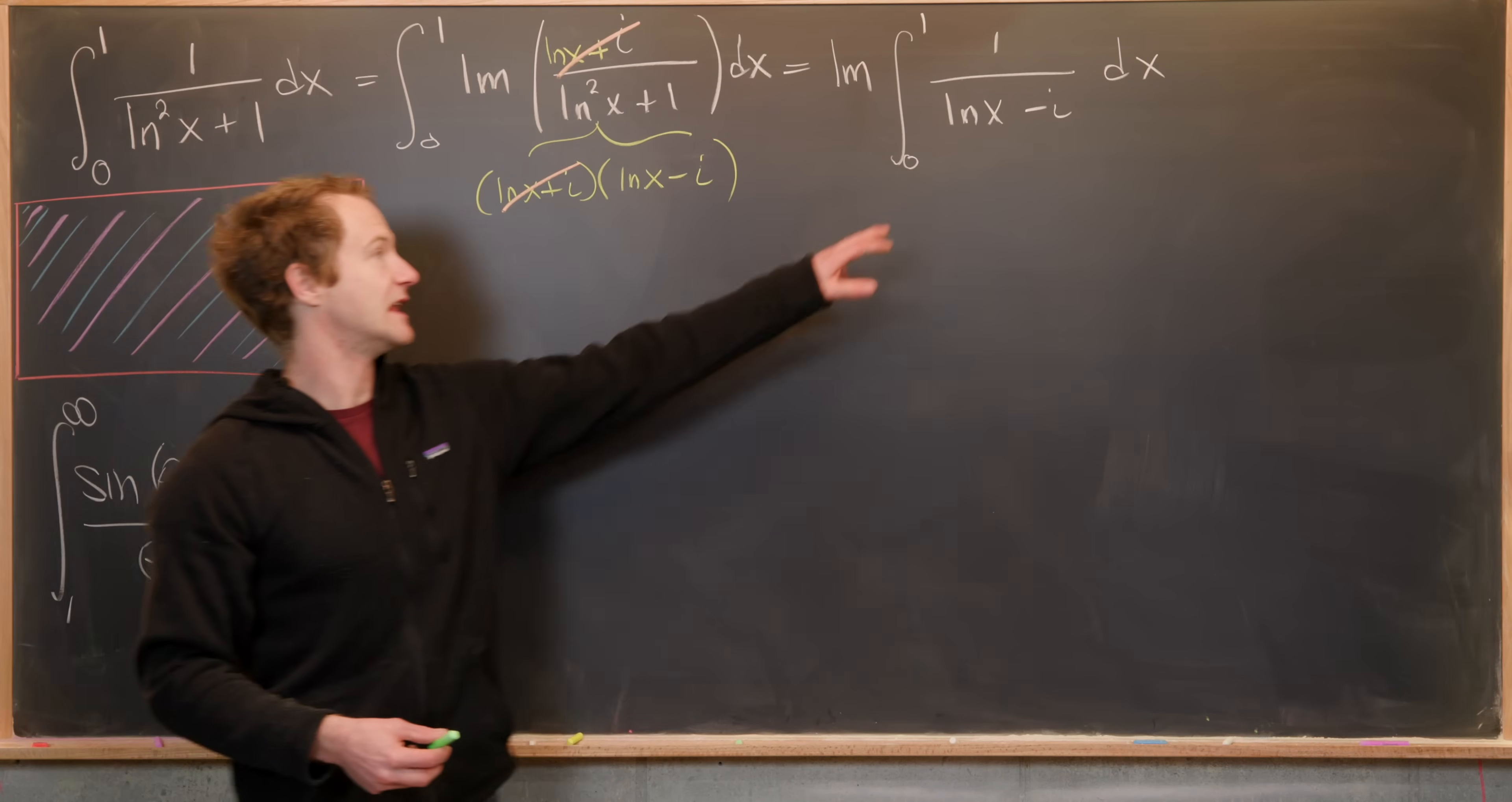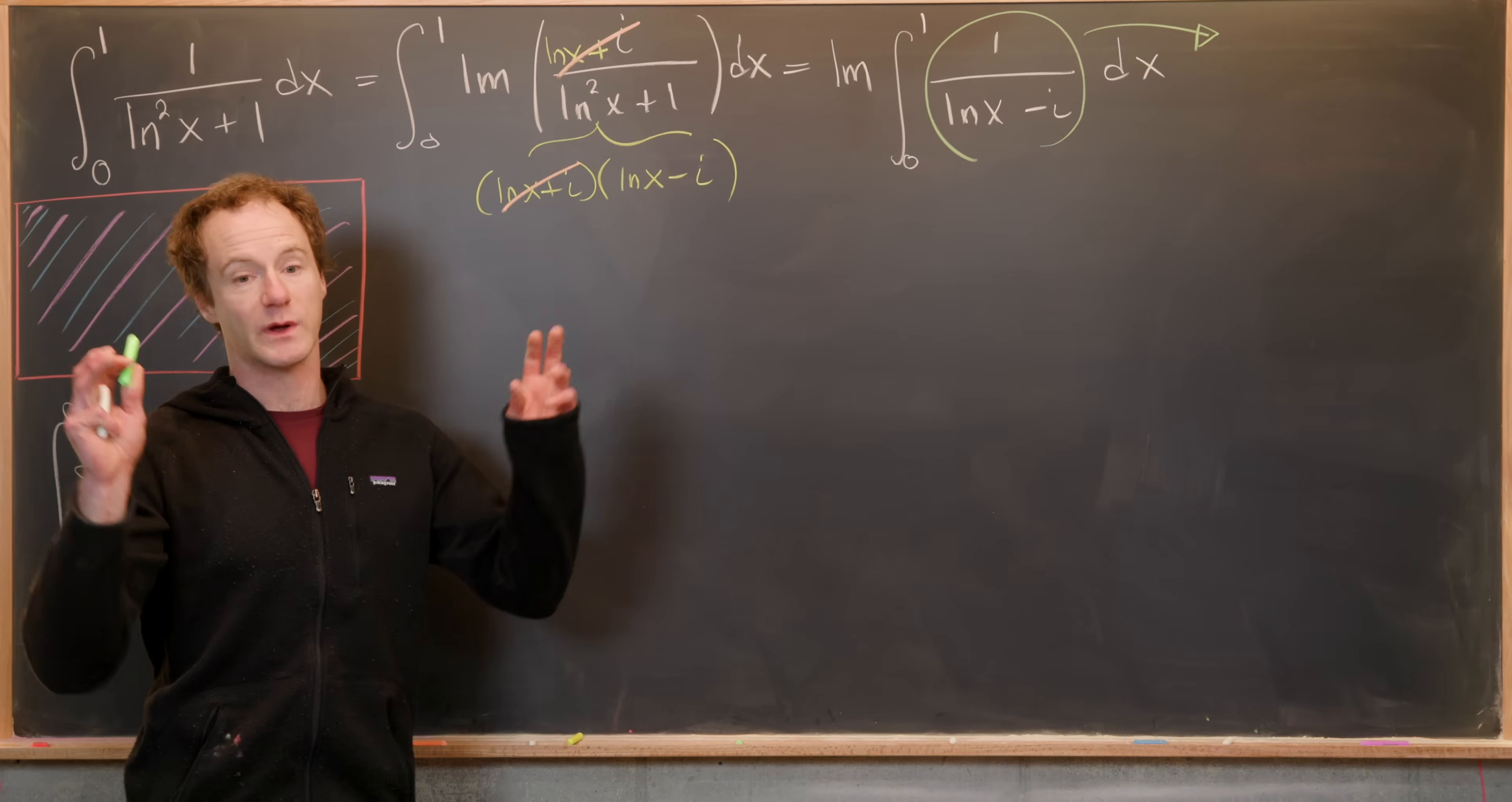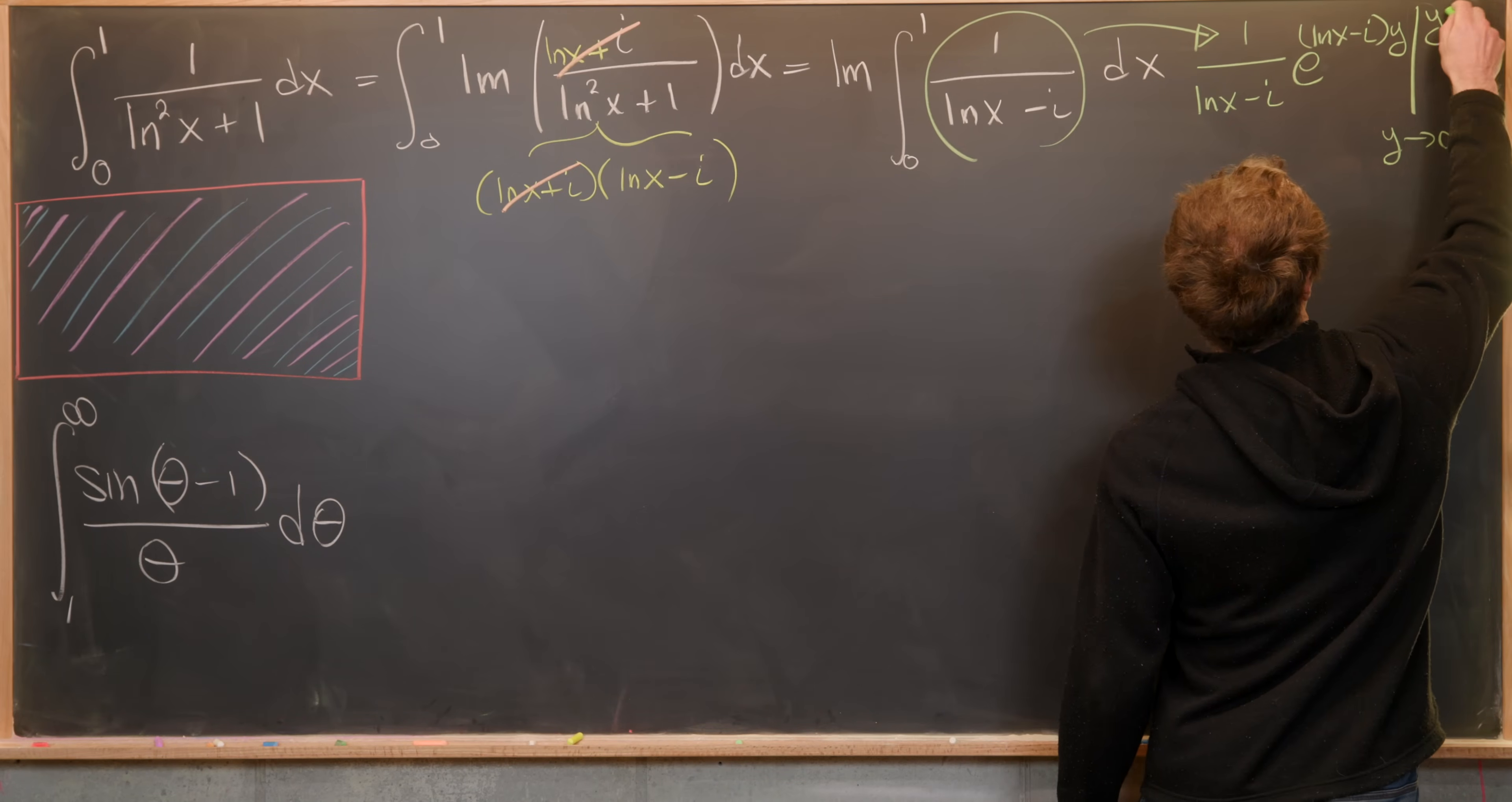Next, I want to take the opportunity to write the integrand as something that looks like the zeroth integral of a function, or maybe after you've done the integral, but before you've plugged in the end points. And if you look around at this for a little bit, you can notice that this guy right here looks like the following quote unquote zeroth integral: it's 1/(ln(x) - i) times e^((ln(x) - i)y), where that's our new variable.